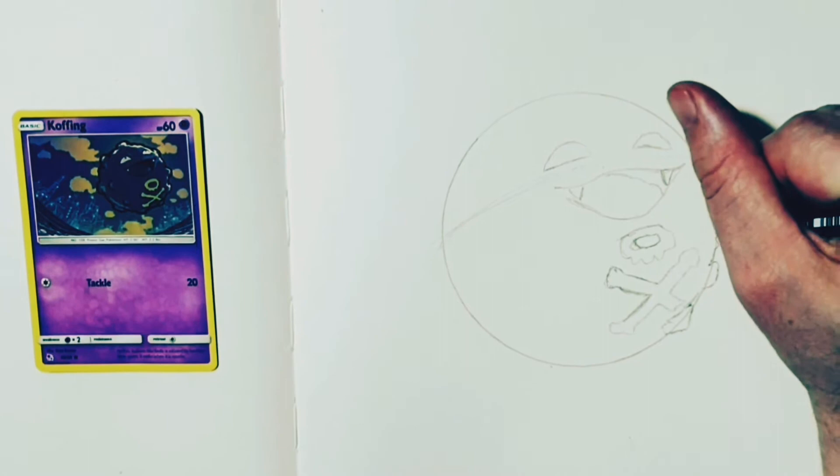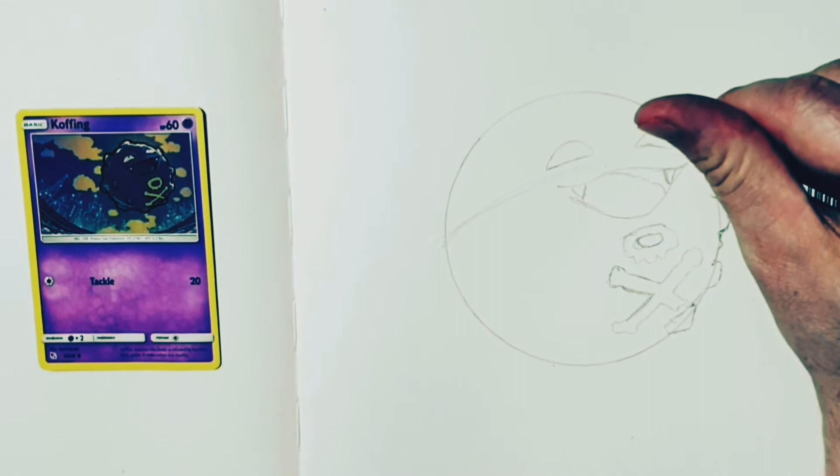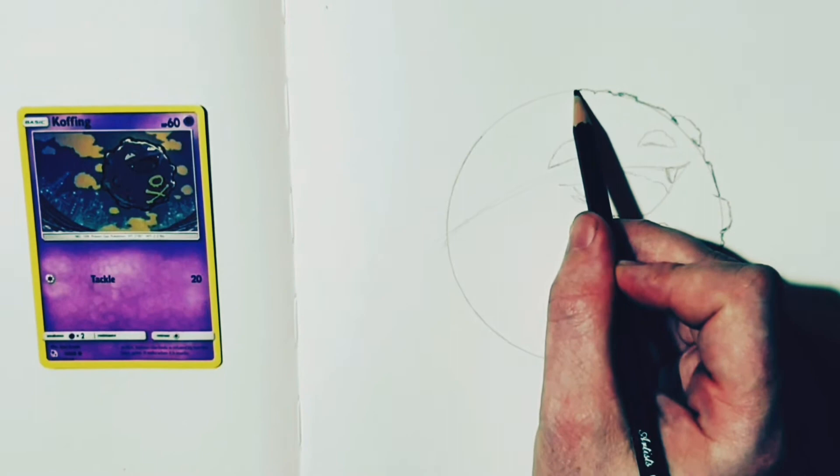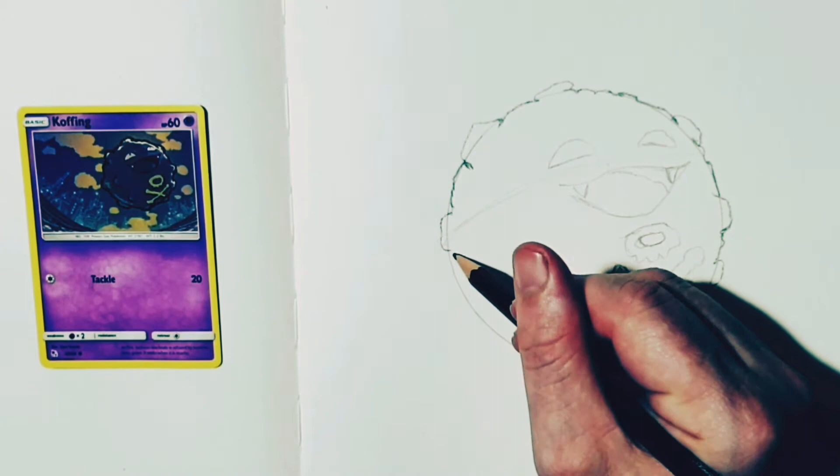So Koffing isn't exactly circular, it's kind of made up with bits and pieces poking out here and there. So that's why whenever I was doing Koffing, I do the circle and then I just kind of exaggerate on some of the features of Koffing coming off there. Because basically the circle is just a guideline of the actual shape of Koffing.